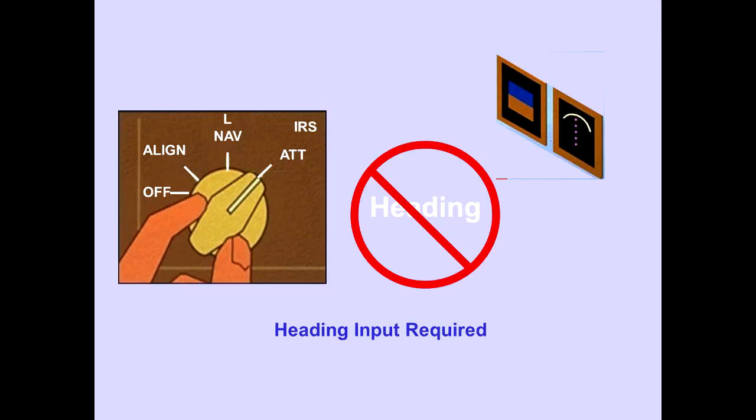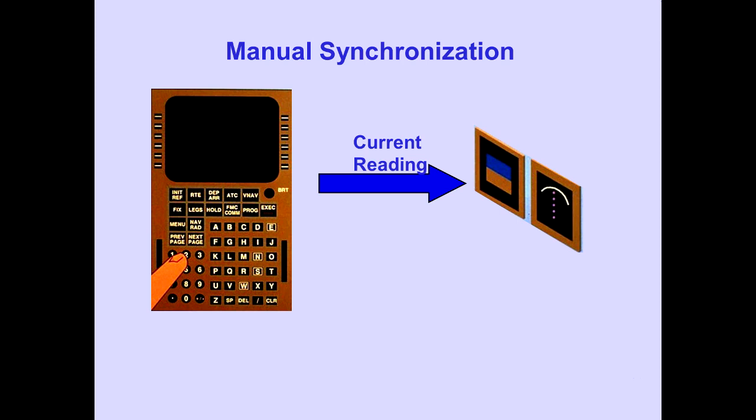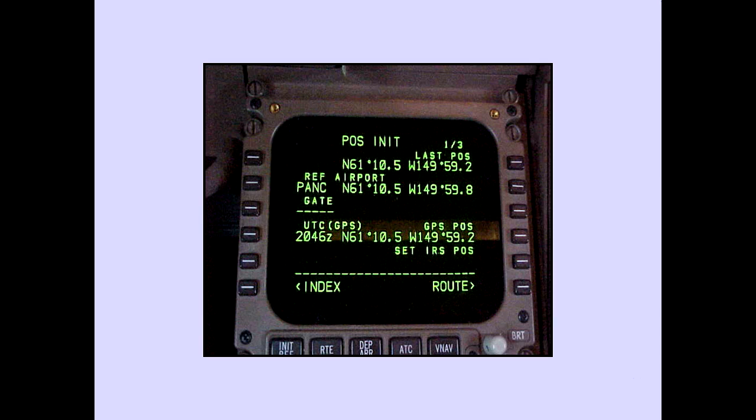While in attitude mode, the IRS will not supply heading to the flight instruments until an input is made to synchronize the heading reference. Manual synchronization of the IRS heading is accomplished by periodically entering a valid current heading in the FMS-CDU. This heading is available for backup if all three IRUs fail. This is done using the position initialization page. Enter the heading on the set heading line, 5L. This heading information is then sent to any IRU operating in the attitude mode. The set heading line blanks again, allowing subsequent entries. The set heading line will not be illuminated unless at least one IRU is in attitude mode.